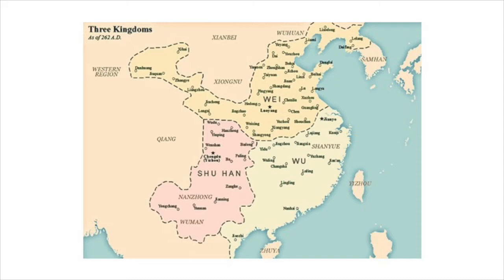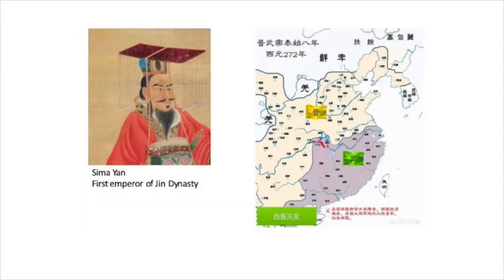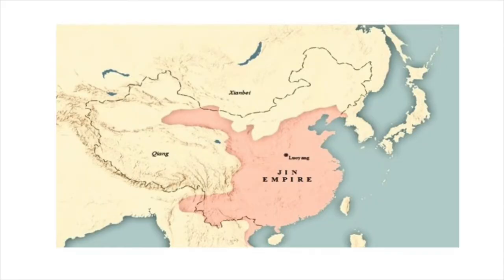Meanwhile, in the Wei Kingdom, Sima Yi and his sons obtained power, and eventually they would be the clan in charge. In the year 249, Sima Yi launched a quick rebellion against Cao Cao's descendants and took the Wei Kingdom under his full control, known as the Gaopingling Incident. In 263, Sima Yi's son invaded the weak Shu Han Kingdom and conquered it. Two years later, Sima Yi's grandson, Sima Yan, overthrew the Wei Kingdom and established the Jin Dynasty. In 280, the Jin Dynasty conquered the Wu Kingdom, capturing southeastern China — China was in one piece again.